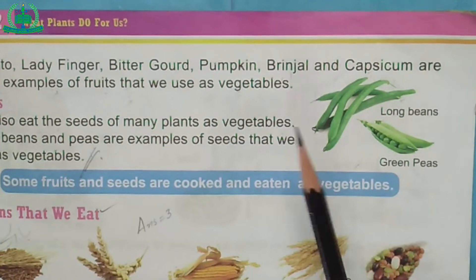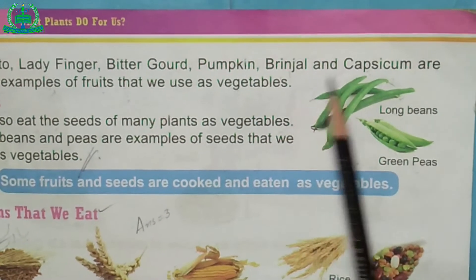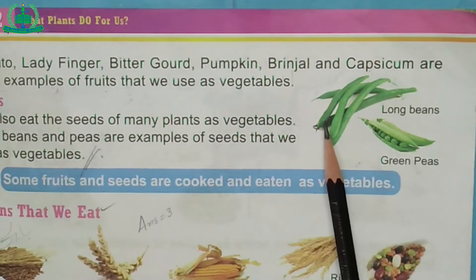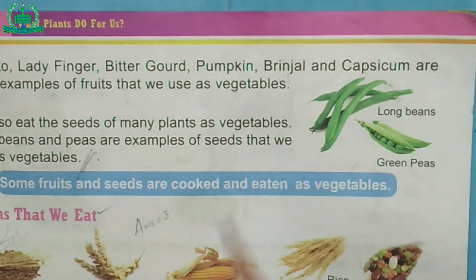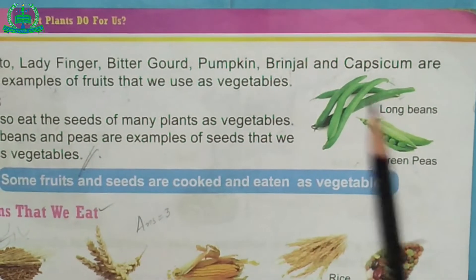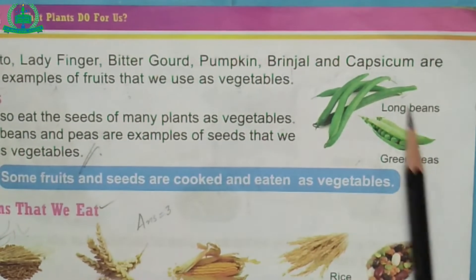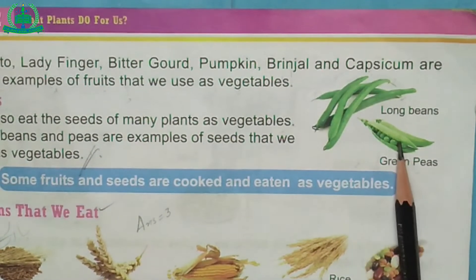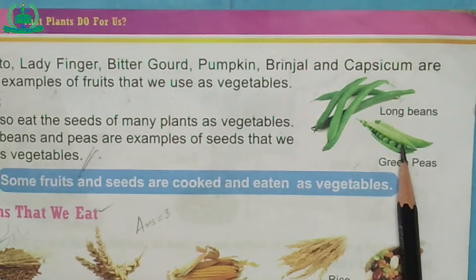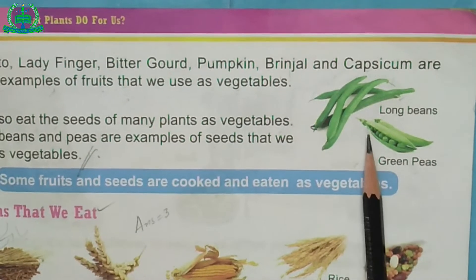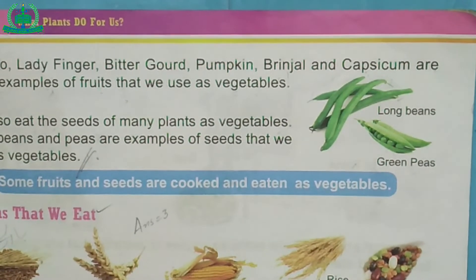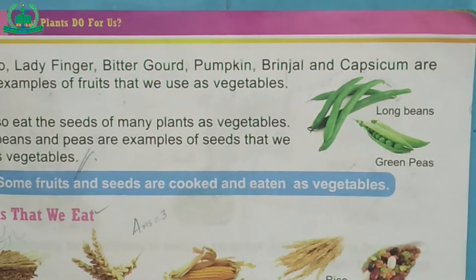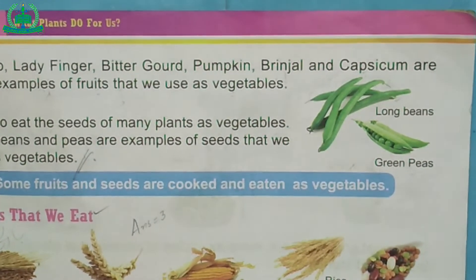Seeds: We also eat the seeds of many plants as vegetables. Long beans and peas are some examples of seeds that we use as vegetables. Some fruits and seeds are cooked and eaten as vegetables.